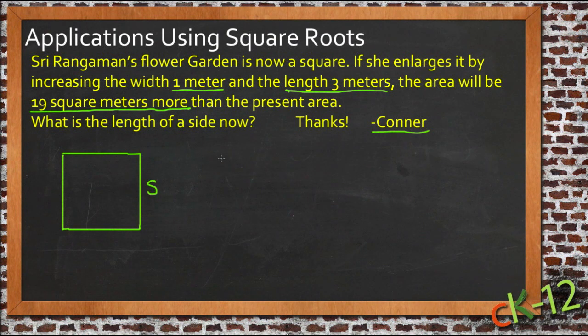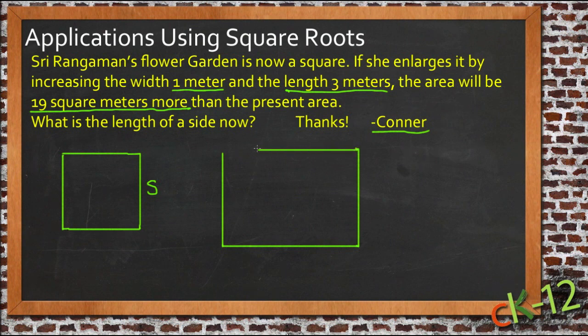Then the new one is going to be a little bit taller, so she increased one dimension by one, and then it's going to be quite a bit longer because she increased the other dimension by three. So the new one will look obviously more of a rectangle, something like this. And then the vertical dimension, the up-down dimension which was S, would now be S plus one.